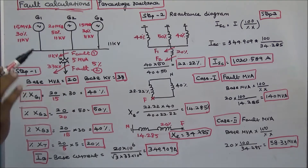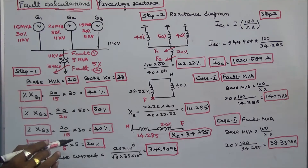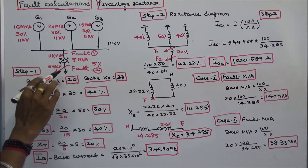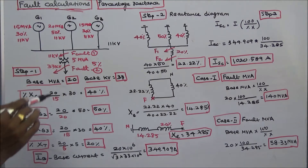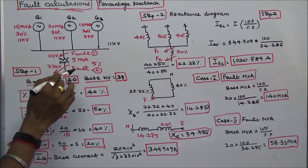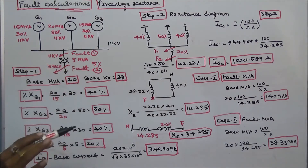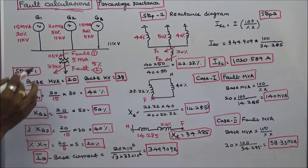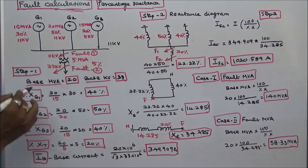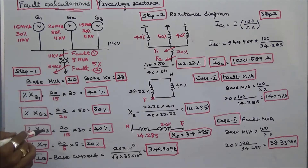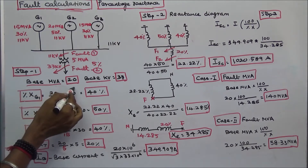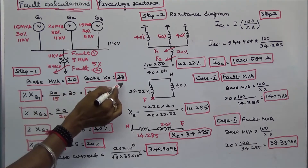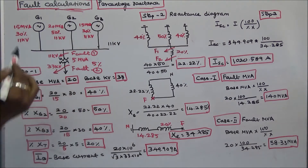Question number two: if a fault occurs at the high voltage side of the transformer, determine the fault MVA. Step one, we choose base MVA and base kV. Base MVA is equal to 20, and base kV is equal to 33.